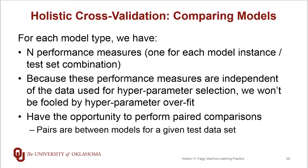For every test data set and model instance of a model type, we get one performance metric and we'll have a total of n of those. This gives us a distribution of performance values that allows us to do a real statistical comparison of this model type versus the other alternatives. Because we are using this independent data, the hope is that we won't be fooled by hyperparameter overfit — picking one that just incidentally happens to work really well for this one particular case — and this last step helps us distinguish real results from incidental results.